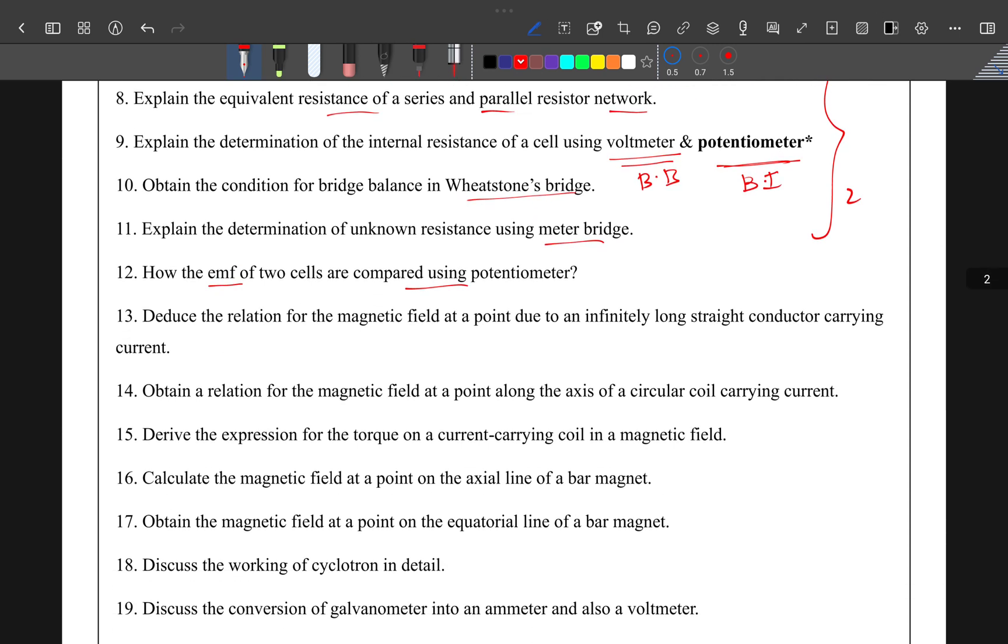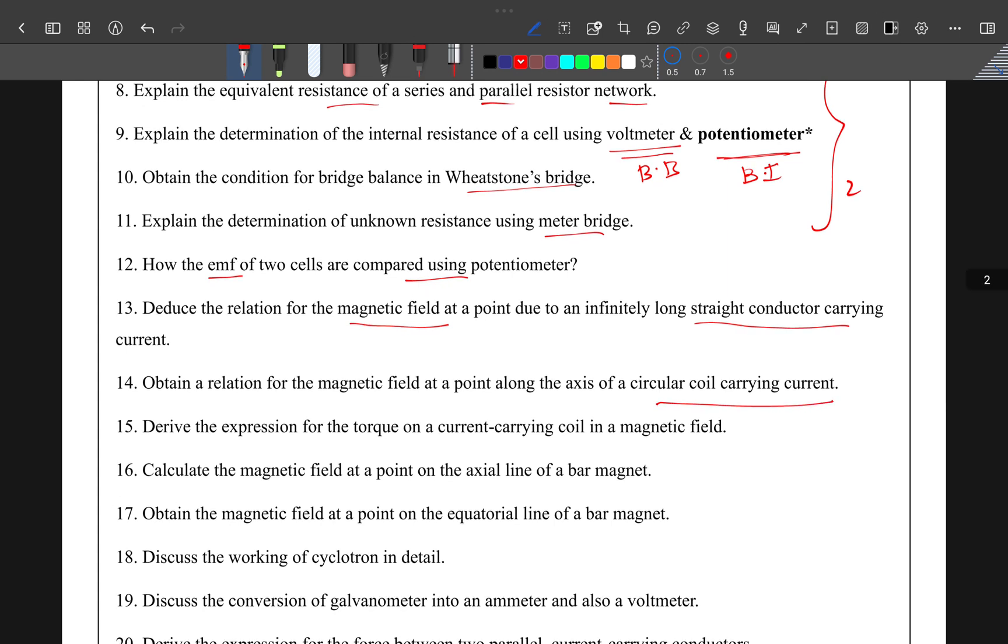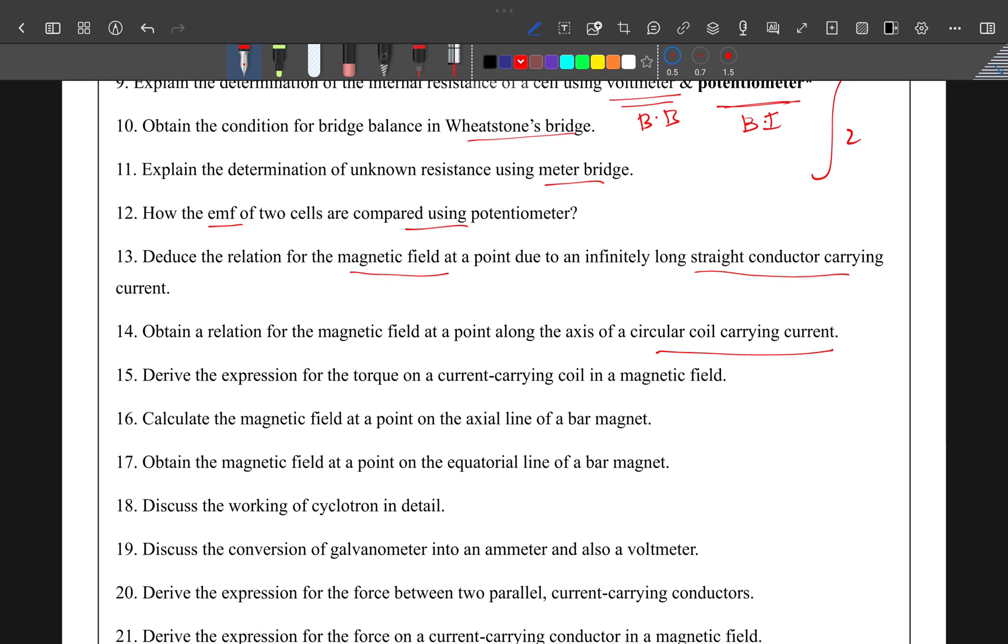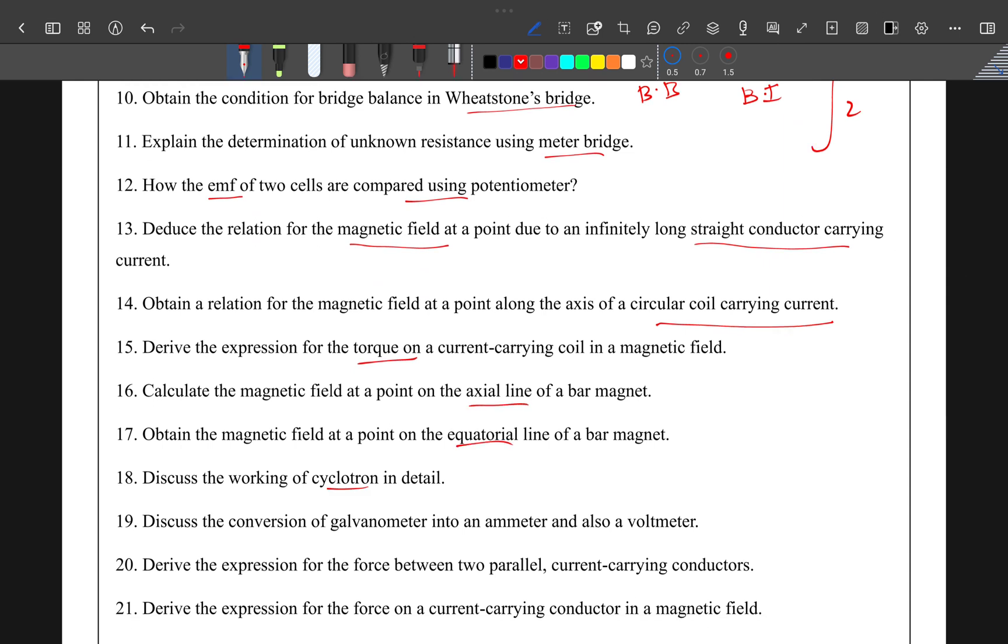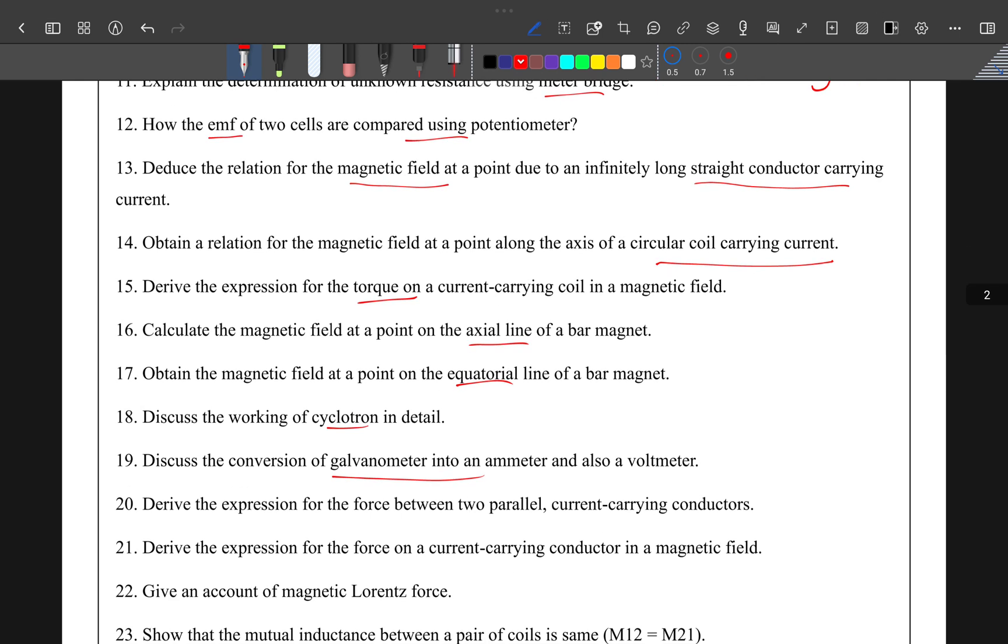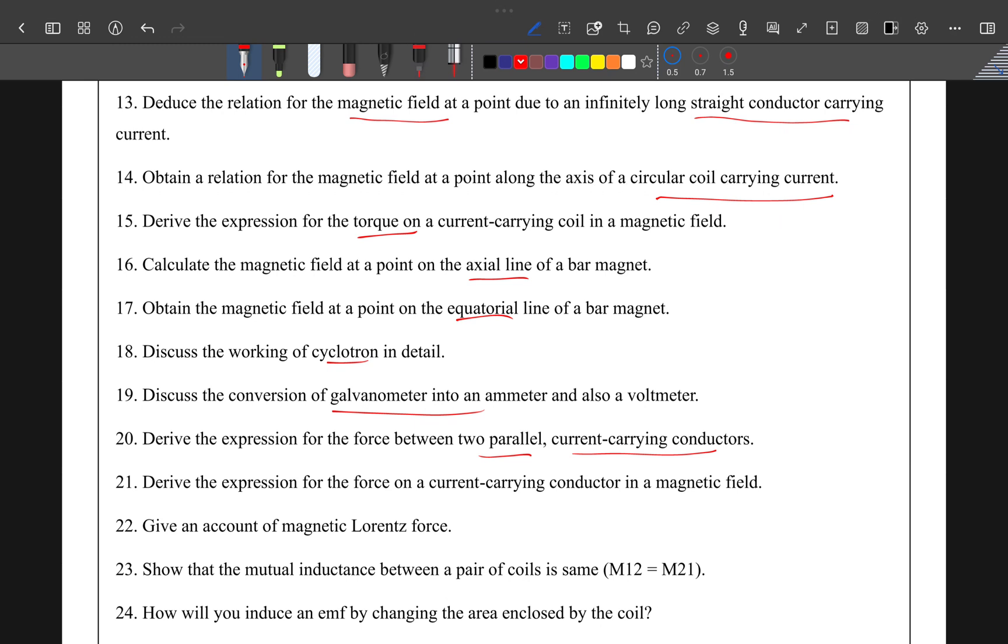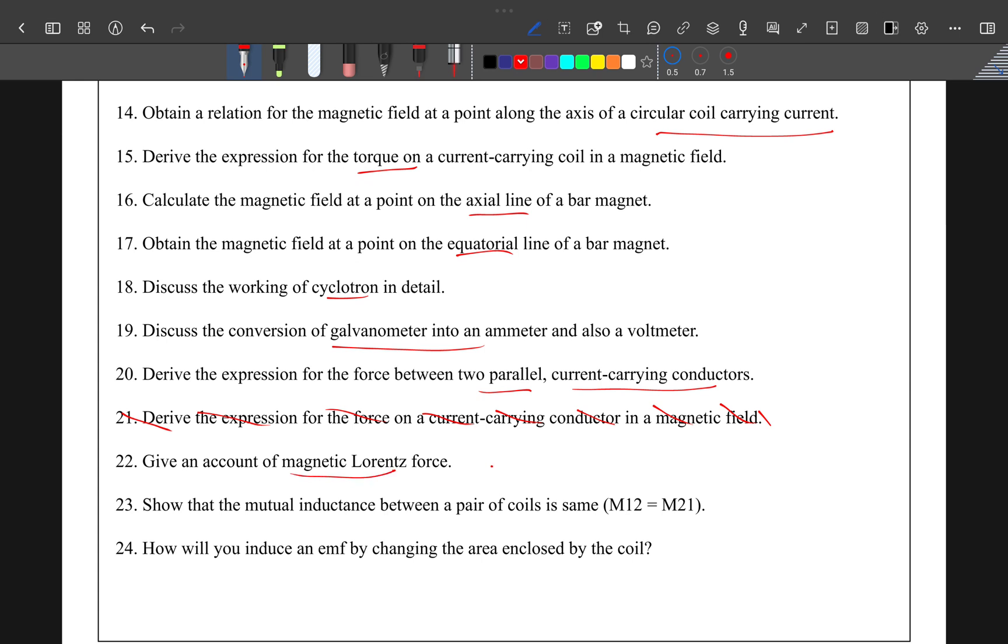Magnetic field at a point due to a long straight conductor carrying current, circular coil carrying current, torque on a current-carrying conductor in a magnetic field, magnetic field at axial line and equatorial line, cyclotron, conversion of galvanometer into ammeter and voltmeter, and expression for force between parallel current-carrying conductors. Also, magnetic Lorentz force. This is the third lesson.